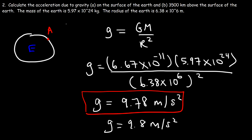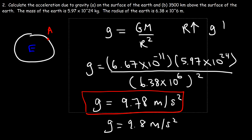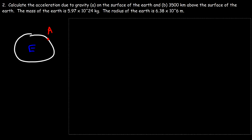When an object moves further away from the Earth, the gravitational acceleration decreases because it's inversely related to the square of the distance. So as the distance from the Earth increases, the gravitational acceleration decreases. Let's calculate the acceleration due to gravity for an object 3,500 kilometers above the surface — it's going to be less than 9.78. Let's see how much less.